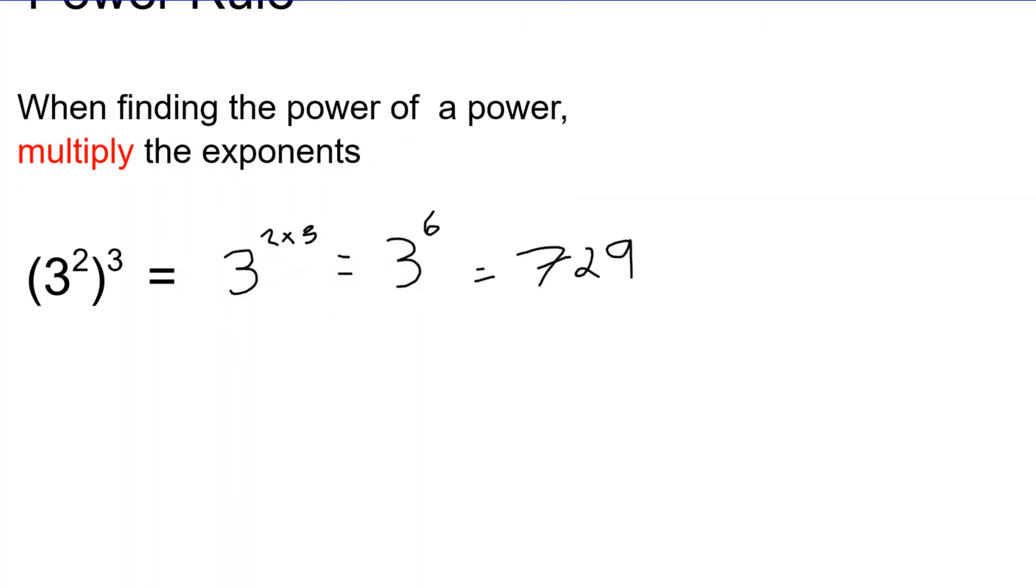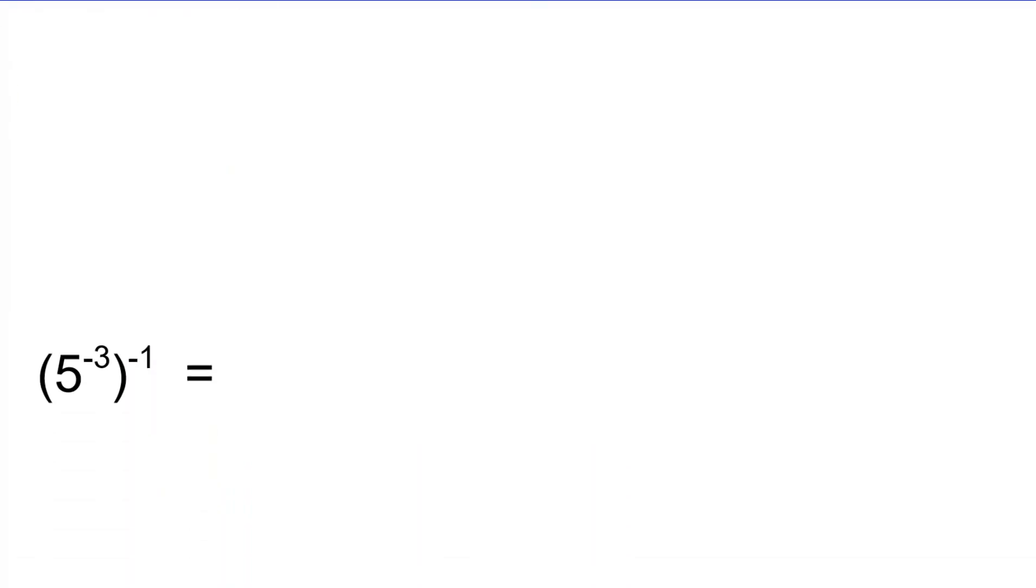We're going to look at one more with the negatives once again. So base is still 5. Our exponent is going to be negative 3 times negative 1. So remember when you multiply double negatives, they become a positive. So it's going to be 5 to the exponent 3, which we saw earlier. So that's going to be 125.